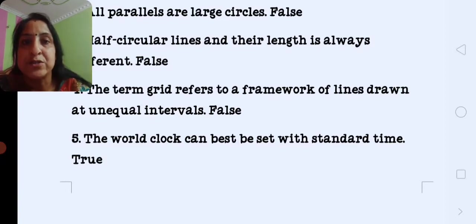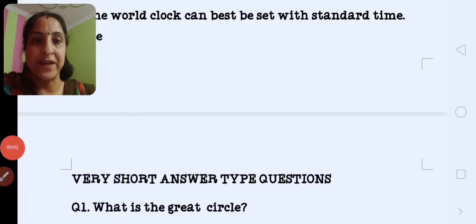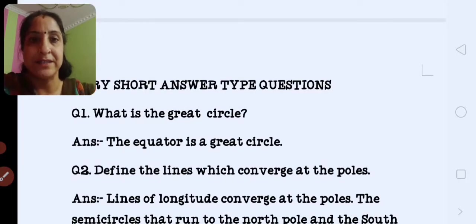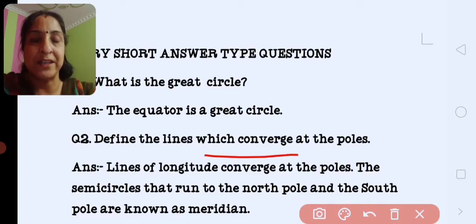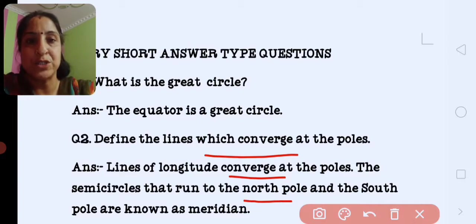Next is our very short answer type question answer. First is what is the great circle? Answer is the equator is the great circle. Next, define the lines which converge at the poles. Lines of longitude converge at the poles. This semicircle that run from the north pole to the south pole, also known as meridians.